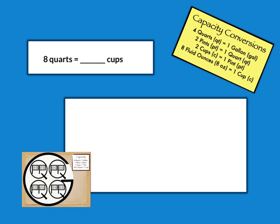So I'm going to use that information and multiply eight quarts times four cups in each quart, giving me thirty-two cups. The answer would be thirty-two cups.